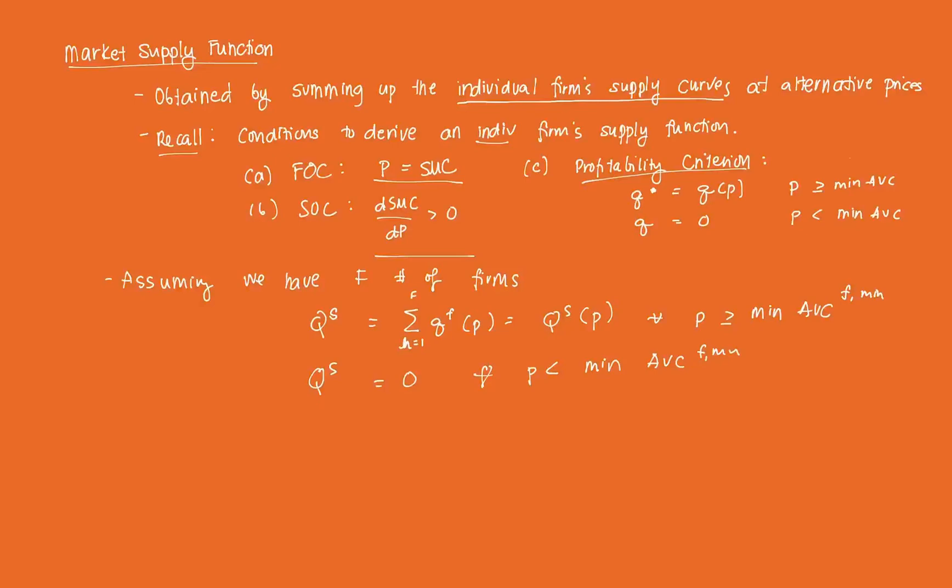And graphically, it looks very similar to the supply curve we've all been accustomed to. If we graph it, P, and then we have Q here, zero. Essentially, the supply curve is an upward sloping curve. And this is your QS.